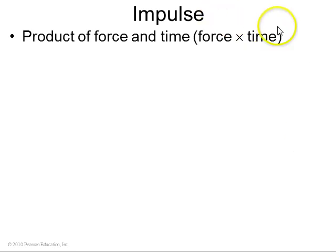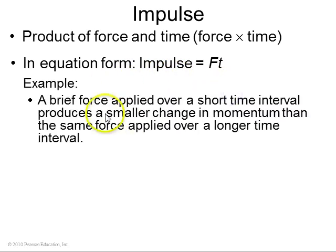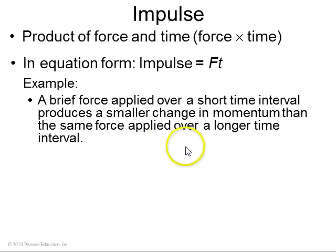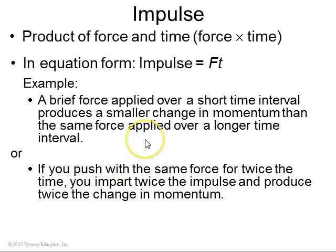Another concept in this chapter is impulse. Impulse is the product of force and time, so the equation is impulse equals force times time. A brief force applied over a short time interval produces a smaller change in momentum than the same force applied over a longer time interval. F is the force applied to an object, and t is the time interval over which that force is applied. If you push with the same force for twice the amount of time, you impart twice the impulse, and so you produce twice the change in momentum.